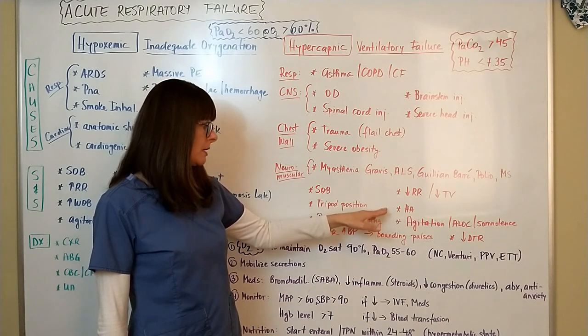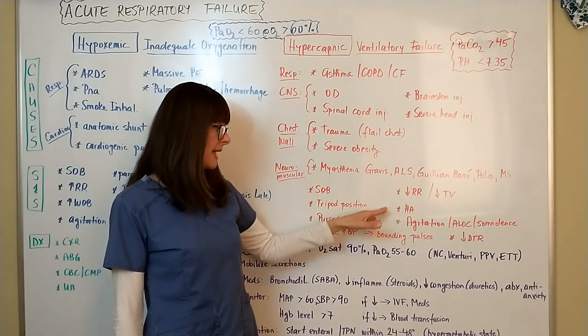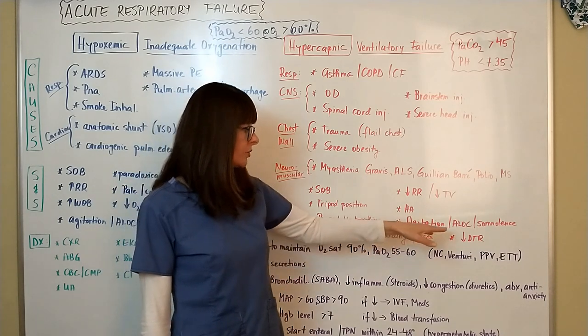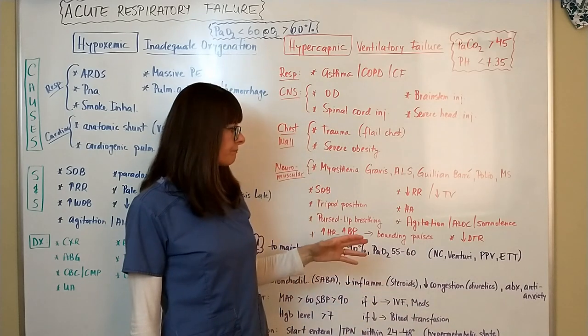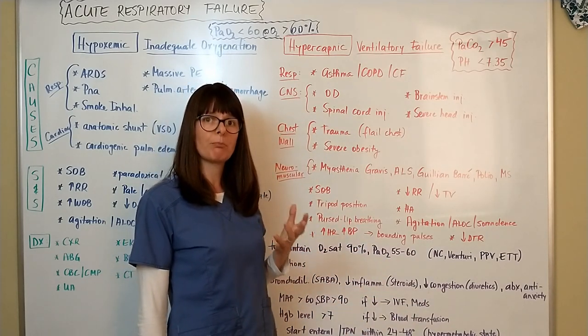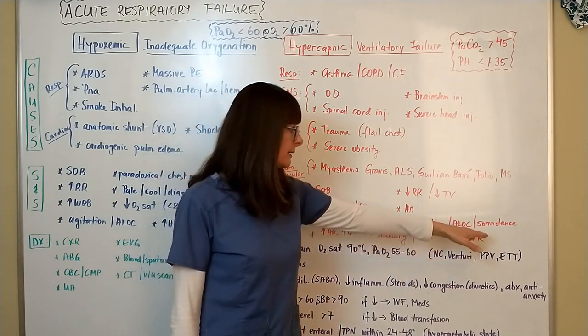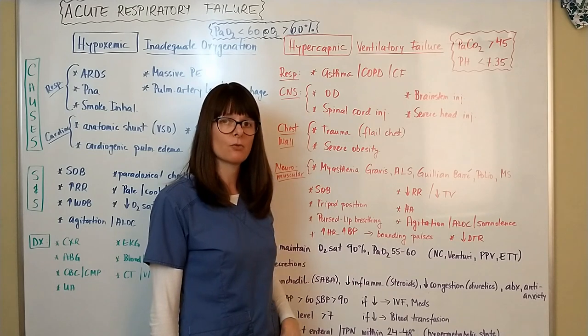The patient might be having central nervous system symptoms such as headache or agitation, altered level of consciousness, and then somnolence. The lack of O2 but more so the buildup of CO2 will make the patient somnolent as well as can cause decreased deep tendon reflexes.